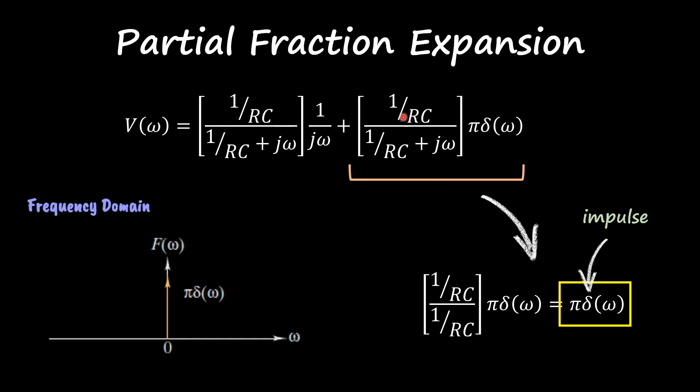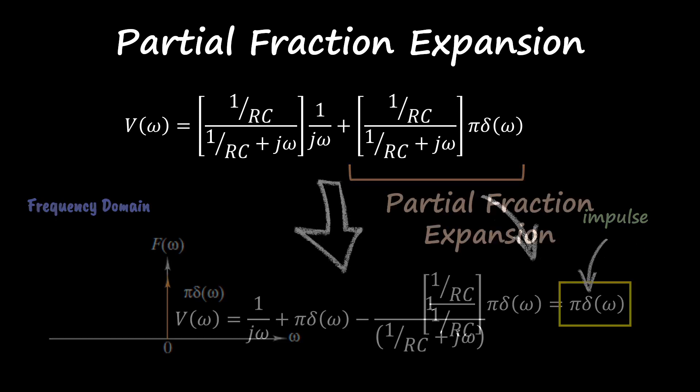That means that multiplying in the frequency domain, multiplying this part with that impulse, is going to give you zero for all omegas or all frequencies besides when frequency is equal to zero. So all I need to do is substitute omega by zero. This part disappears and you get just this, and that's why you get this as an answer.